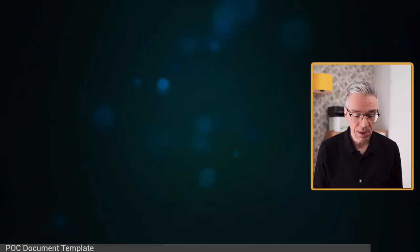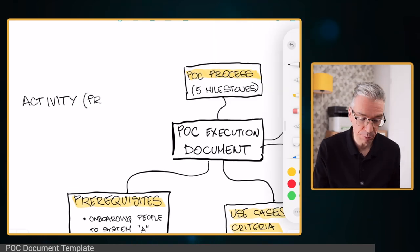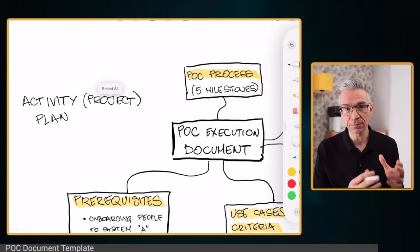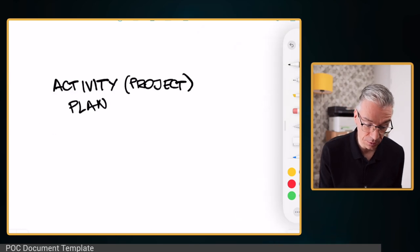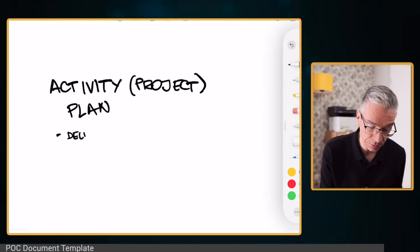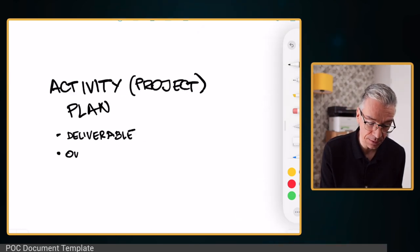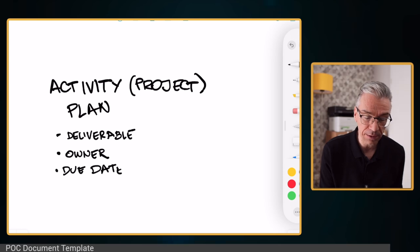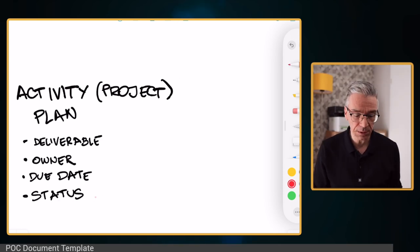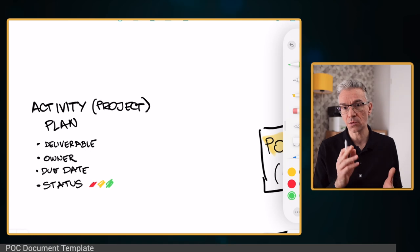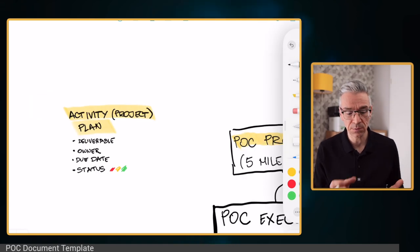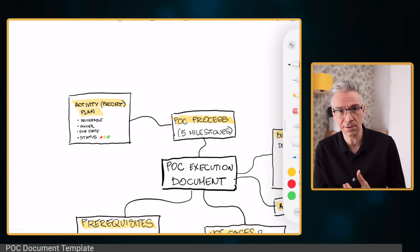The last thing I want to have in this document is the actual project plan — the activity plan. This thing drives the POC execution. It's important to have the deliverable specified, the owner specified, the due date, and I like to have a status column. In this status column I track the execution progress. We have those check-ins and stand-up meetings where team members on the customer side report on progress, and that's what I like to track.